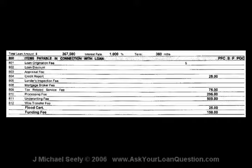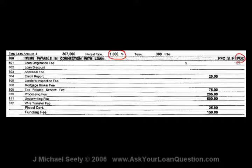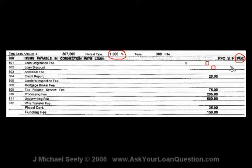Here we're looking at a Good Faith Estimate — a GFE. In the GFE, we see a 1% interest rate, which is a clear clue this is an option ARM. We also see on the far right 'POC' — that stands for paid outside of closing, meaning someone's getting money back from the lender that the borrower may not know about. It's also a clue because we see no loan origination fee, no loan discount fee, and no mortgage broker fee in the 800 series. Since we see nothing there, we must assume the broker is getting paid somewhere else.